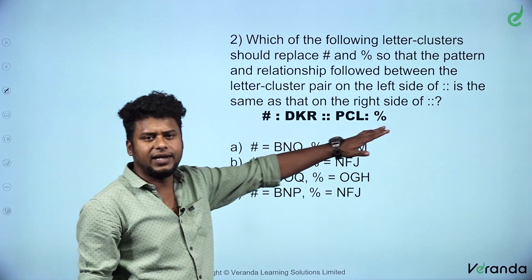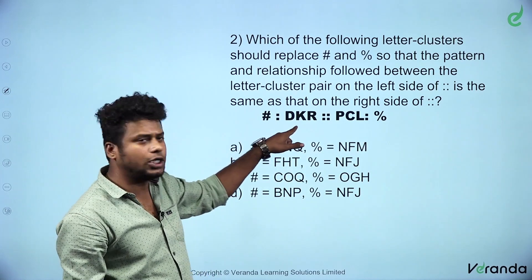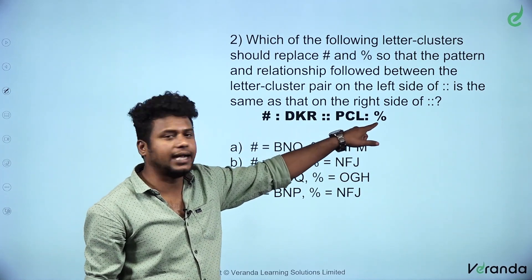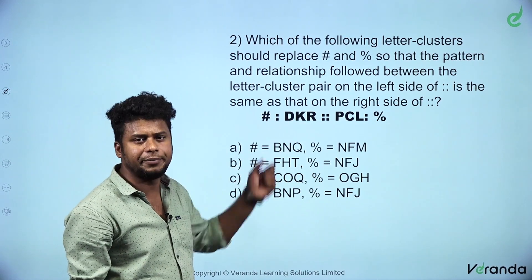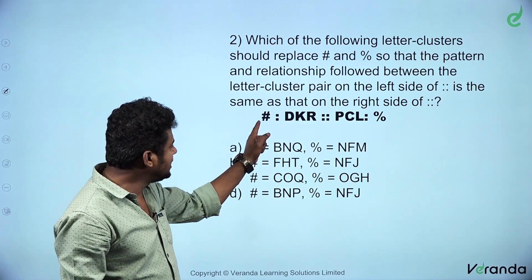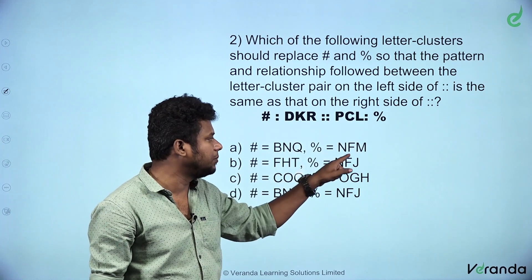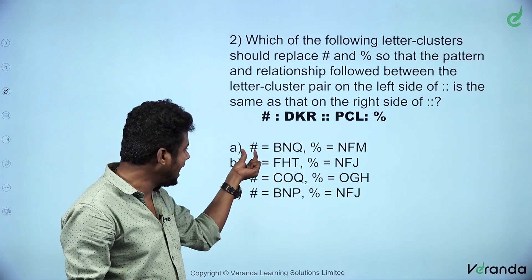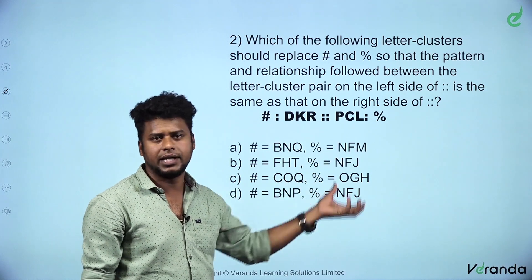This is a different type of letter analogy. ASH is related to DKR. PCL is related to percentage. So, this is not related to any obvious logic. We can substitute for ASH as well, and substitute for percentage as well. In the option, ASH is equal to BNQ.